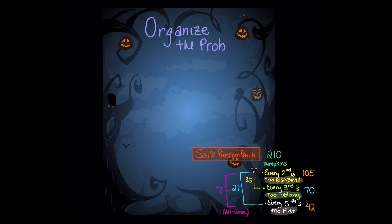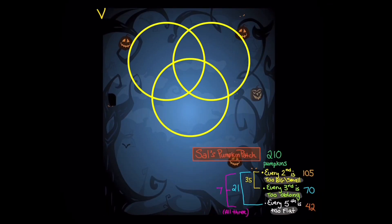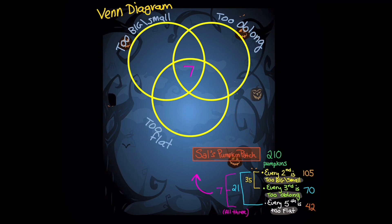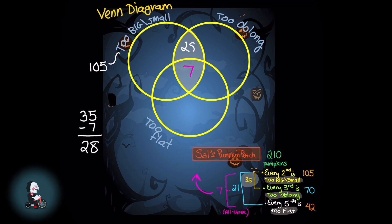In order to figure out how many perfect pumpkins there are, we must organize the problem using a Venn diagram. Each circle represents a condition of imperfection: one circle is too big or too small, another is too oblong, and the third is too flat. In the middle we have 7, because there are 7 pumpkins with all three features. Out of the 105 in the too big or too small category, some overlap with too oblong. Since 7 have all three, that leaves 28 that are just too big or small and too oblong, but not too flat.